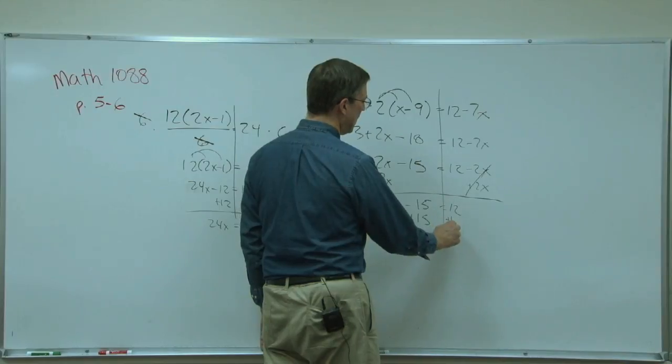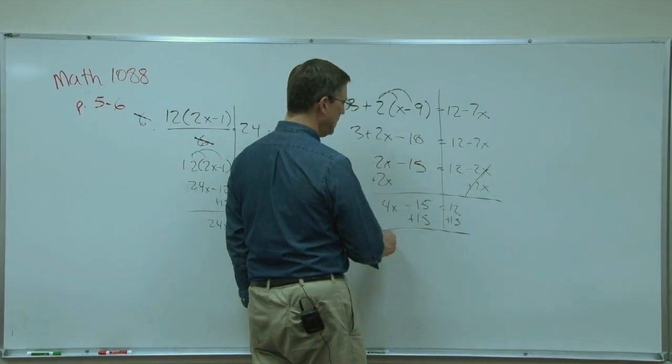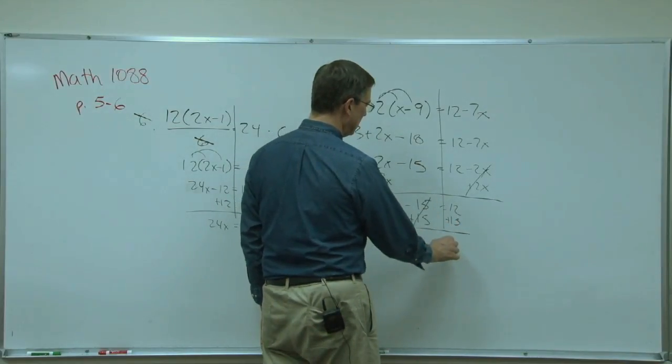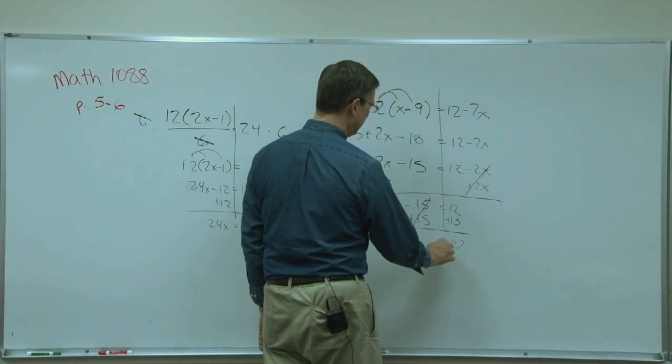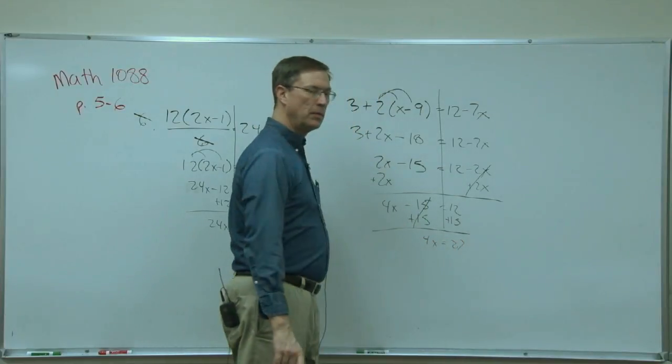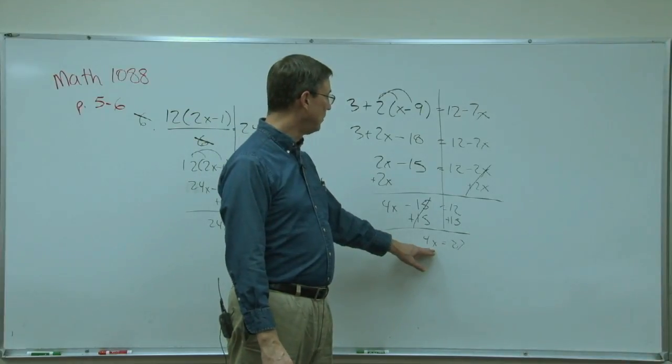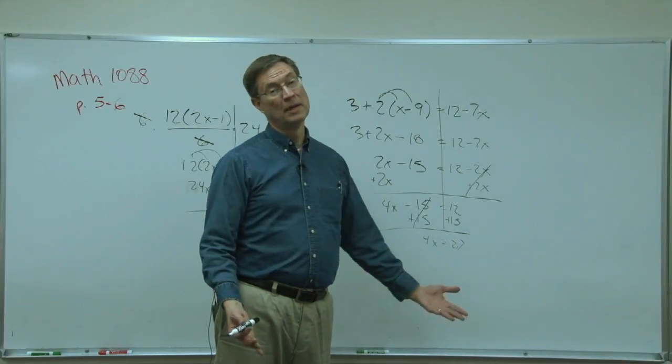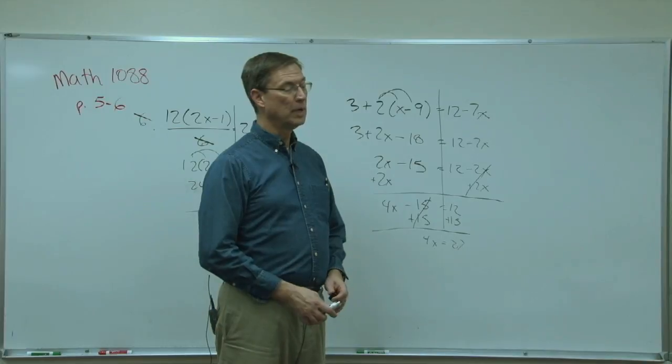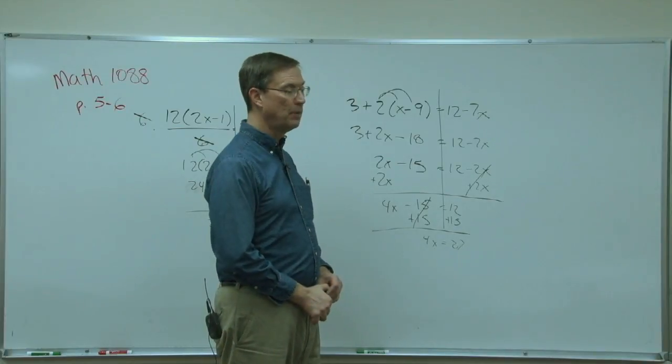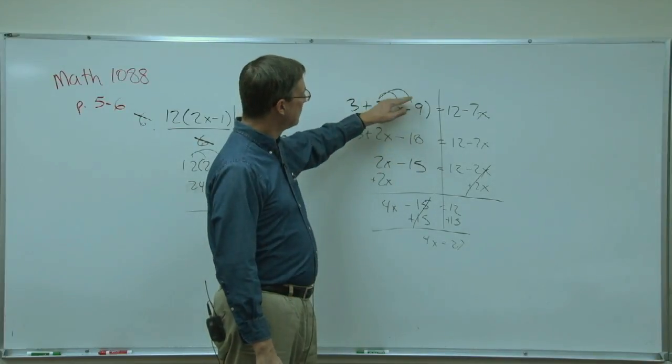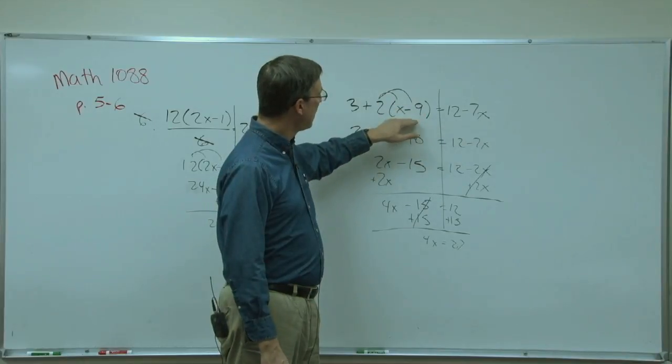And then we're almost done. We add the 15 to both sides and get 27. And then again we're almost to the last step and I'll let you finish it, because all we have to do is divide both sides by the 4 and then write it as a mixed number. I don't think you'll find that one to be too hard, but you just have to follow through the distributive property first.